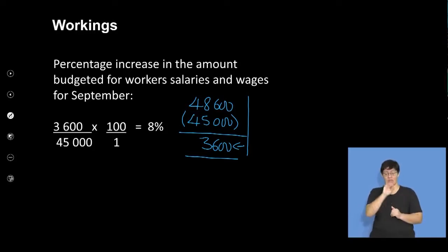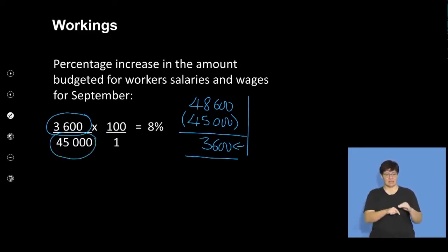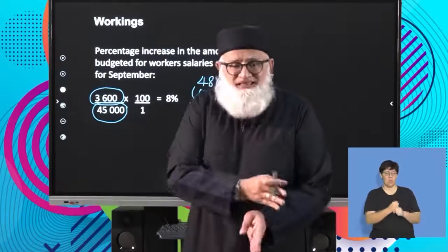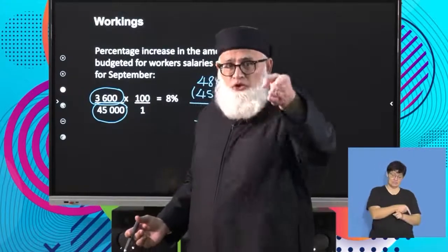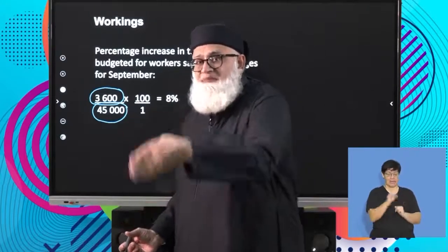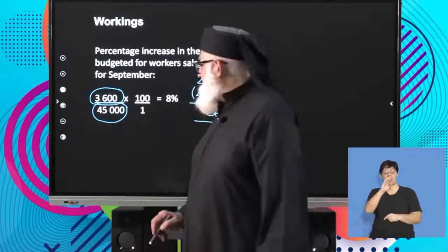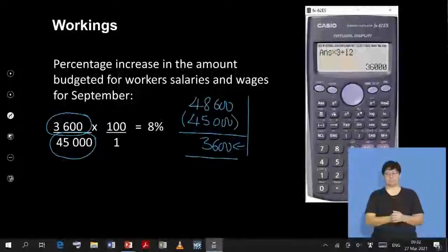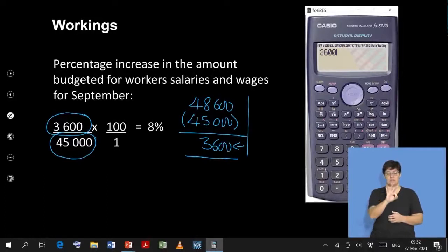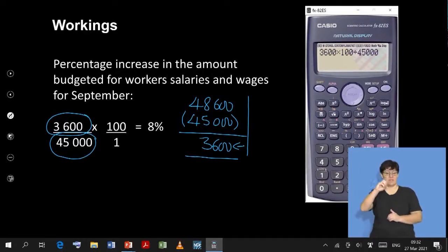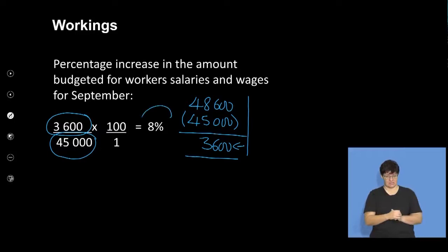Once I have my $3,600, I take my $3,600 over the base month — the month before the increase took place, which was $45,000 — and multiply by 100 over 1 to give you a percentage. So it's $3,600 times 100 divided by $45,000, and that will give you a figure of 8%. In other words, there was an increase of 8% in our salaries for the workers.